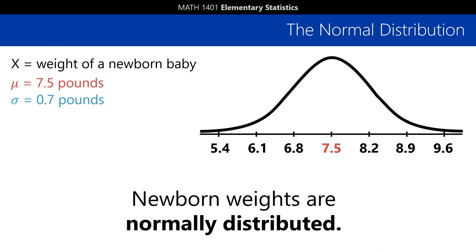It turns out that, like many real-life phenomena, newborn weights are normally distributed, which means that they tend to follow that characteristic bell curve shape that we first saw when we talked about standard deviation. The distribution has a mean of 7.5 pounds and a standard deviation of 0.7 pounds.